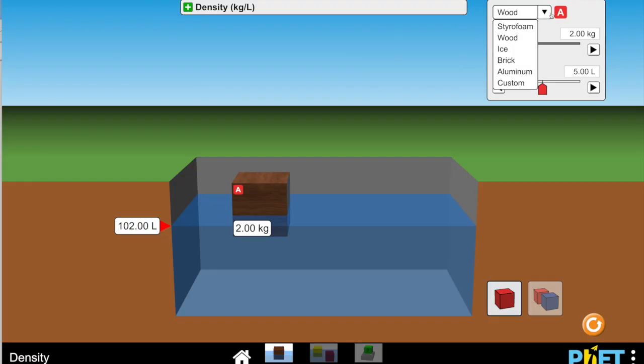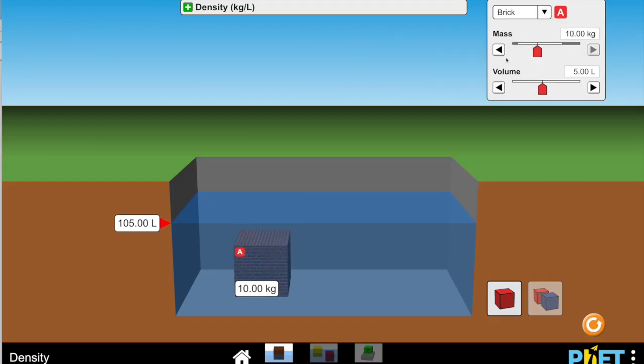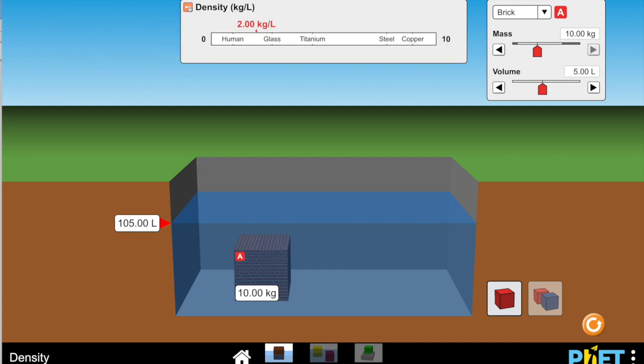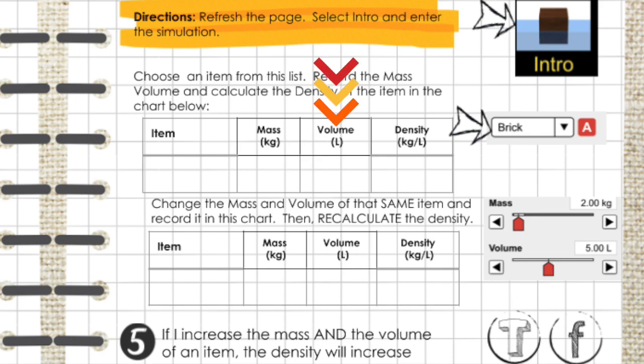Go back into the simulator. To click your item, click here. Then open up the density panel so you can see the density of your item. In your notebook page, you're asked to record the mass, the volume, and the density of your item.